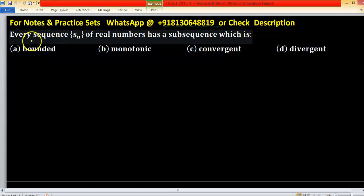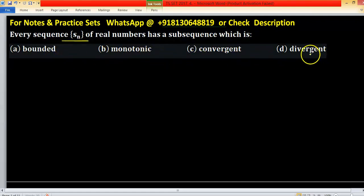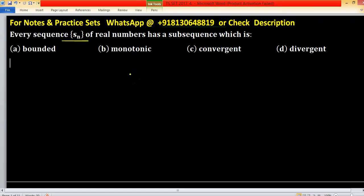In this problem, every sequence Sn of real numbers has a subsequence which is bounded, monotonic, convergent, or divergent. There are four options.